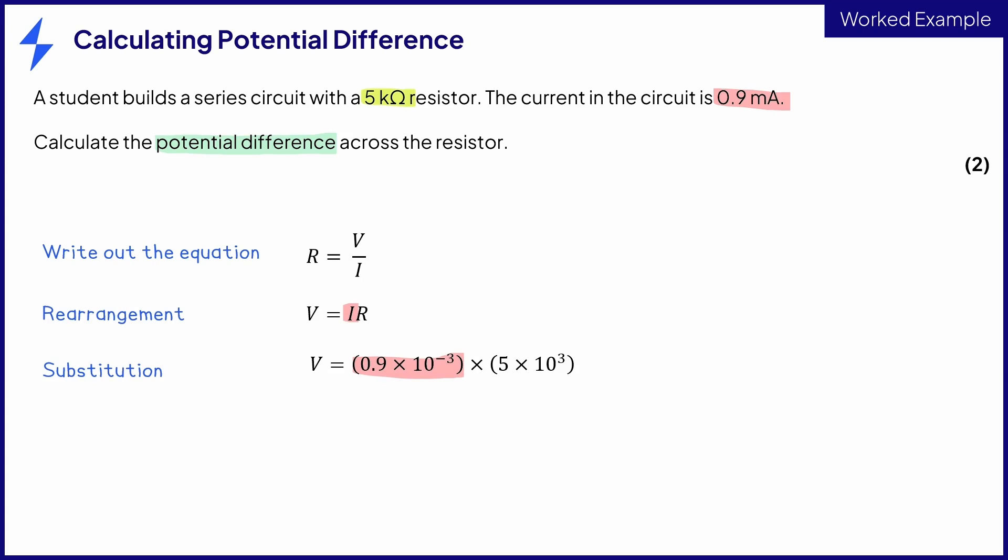Then we substitute in the known values. We have 0.9 milliamps of current, which is 0.9 times 10 to the minus 3 amps, times 5 kilo-ohms of resistance, which is 5 times 10 to the 3. And that correct substitution gets you the first mark. This gives us a potential difference of 4.5 volts for the final mark.